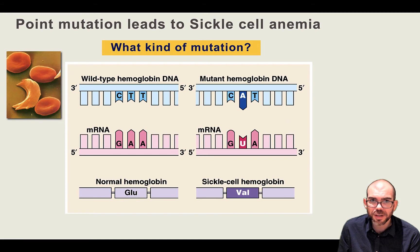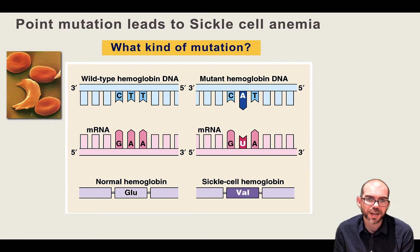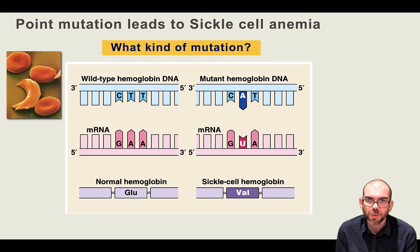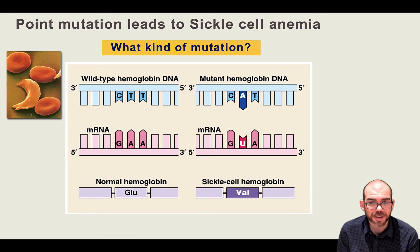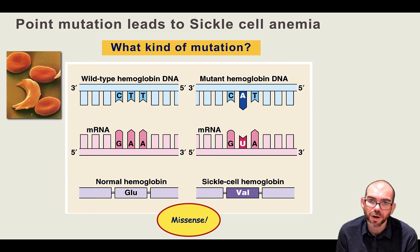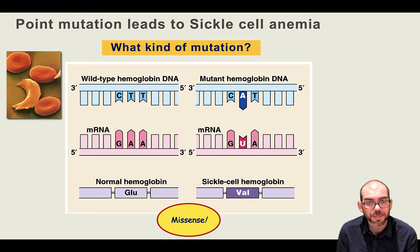So let's go back to sickle cell anemia. I showed you the wild type — we had GAA as our mRNA and produced glutamic acid. With the mutant, we mutated to GUA and now produce valine. What type of mutation was this? This was a missense mutation — a point mutation where one nucleotide was substituted: A was substituted for U, and I'm now producing a different amino acid.